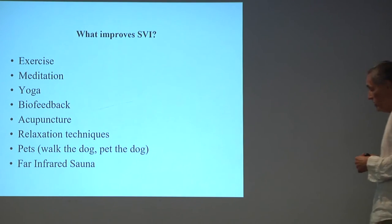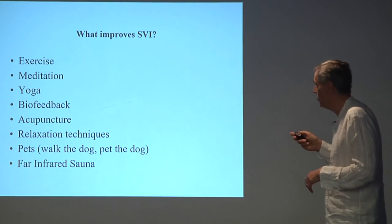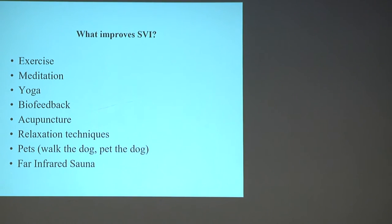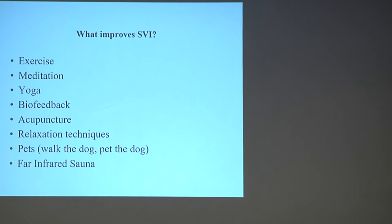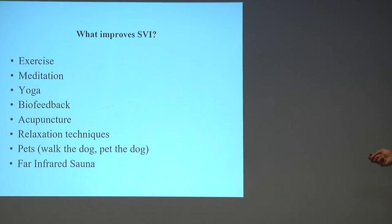What improves sympathovagal imbalance? Exercise, meditation, yoga, biofeedback, maybe acupuncture, relaxation techniques, pets, and far infrared sauna. There's tons of data supporting these interventions. Acupuncture is still a question mark — the data is not real strong. But all of these other interventions in patients with or without insulin resistance show improvements in sympathovagal imbalance.